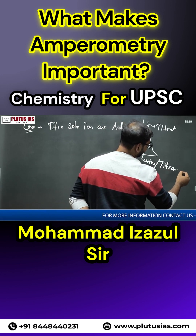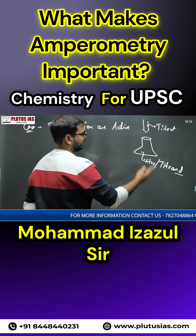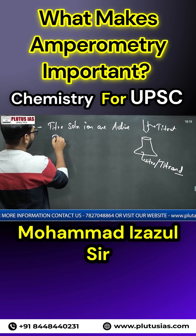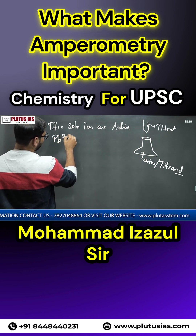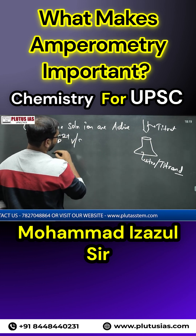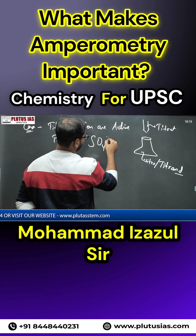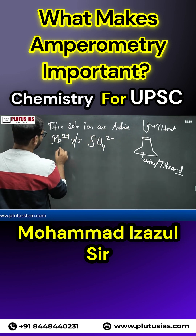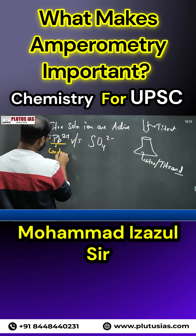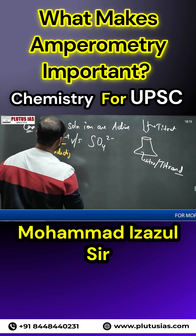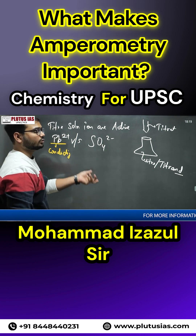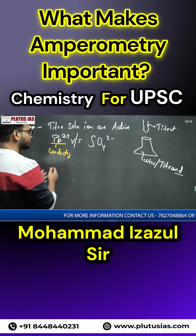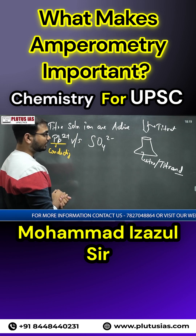Let's assume we are titrating Pb²⁺ ions with SO₄²⁻ ions. Assuming only Pb²⁺ ions are conducting in solution — for example, in a lead sulfate salt in H₂SO₄ — the SO₄²⁻ will entirely become spectator ions. So Pb²⁺ is conducting and SO₄²⁻ is non-conducting.